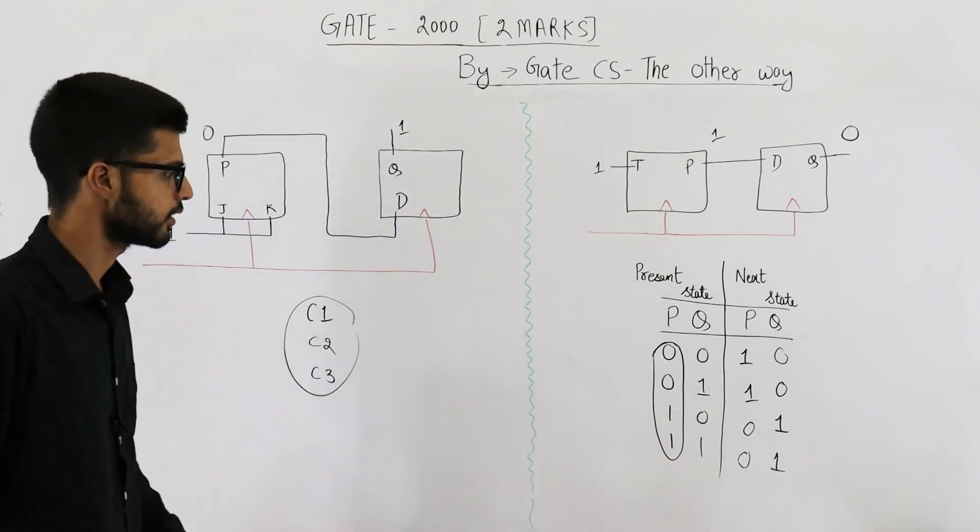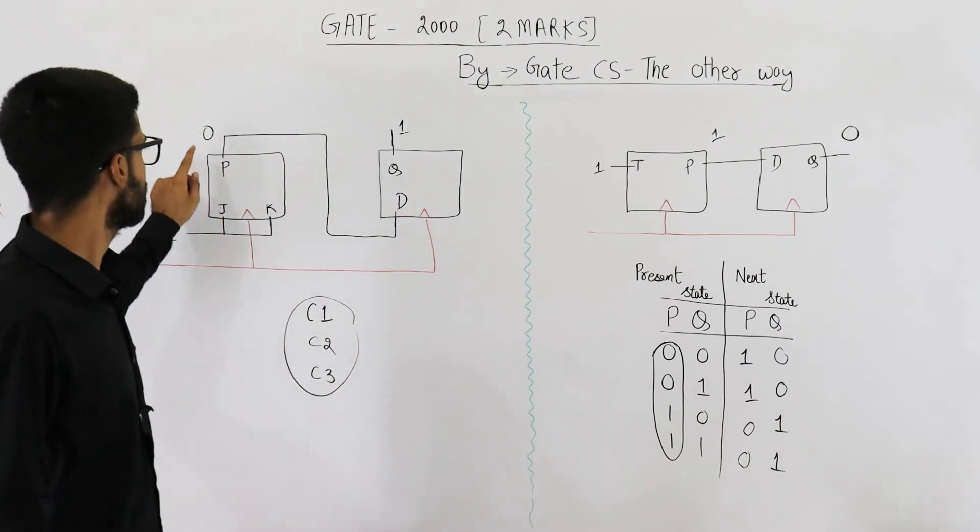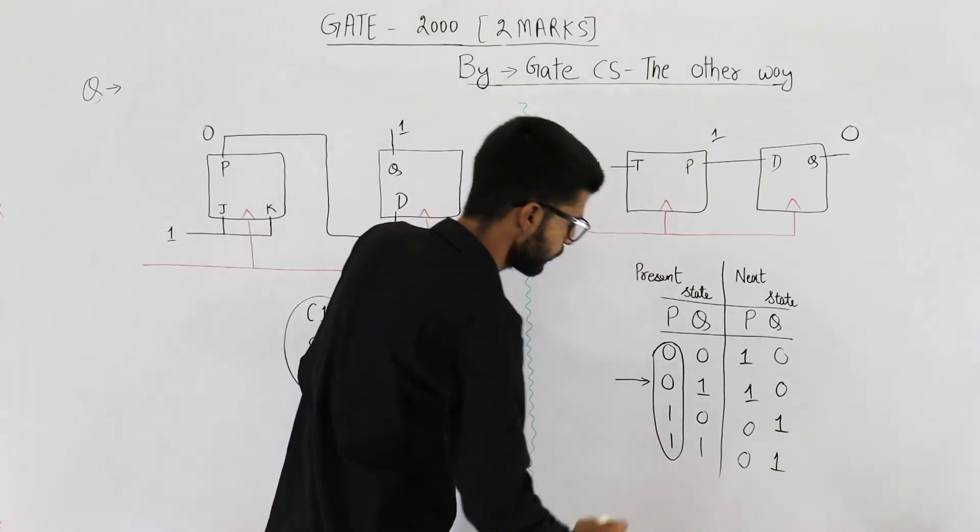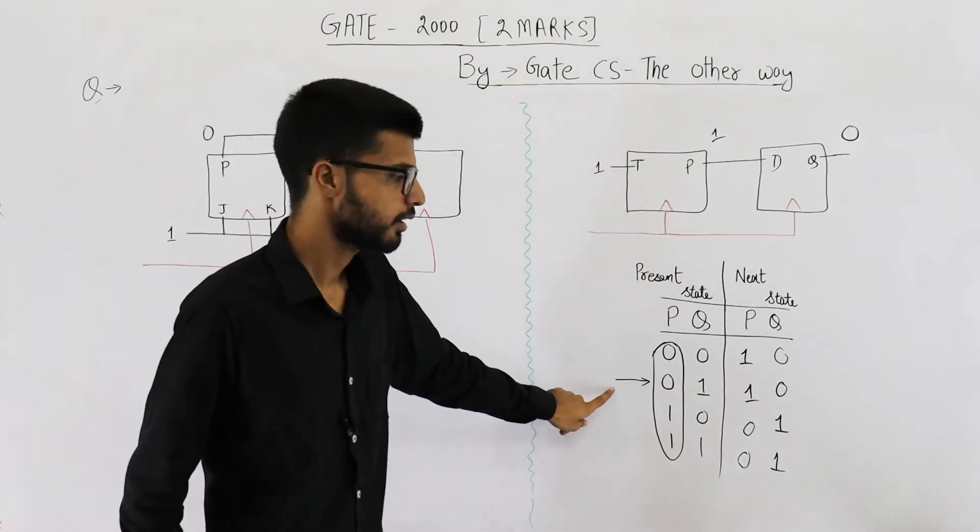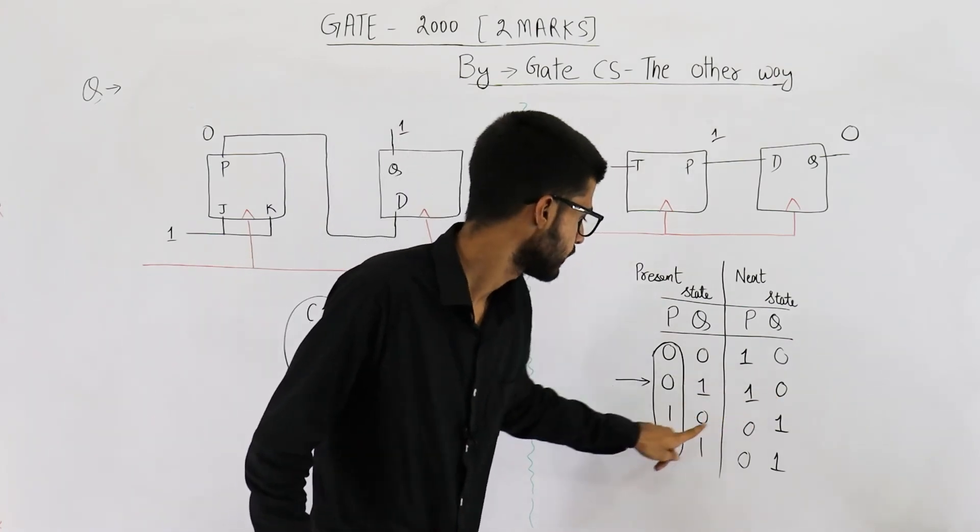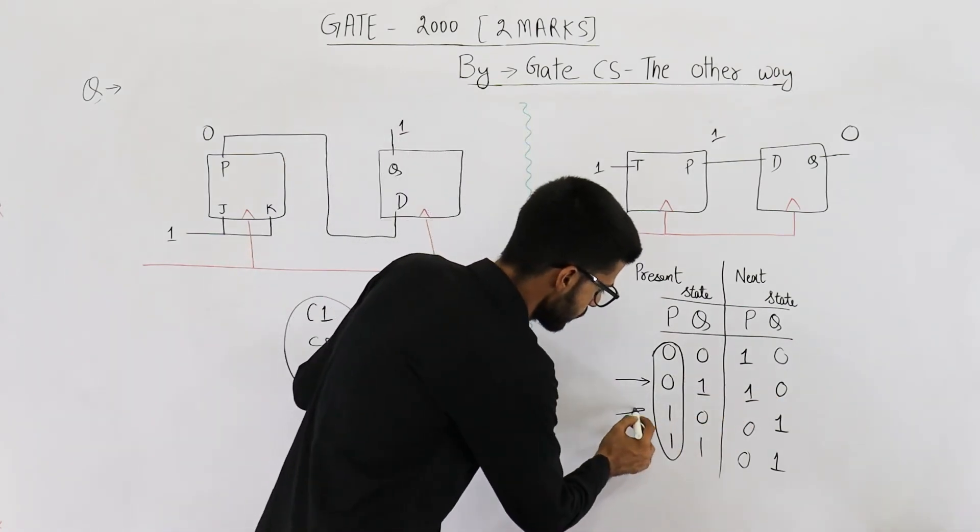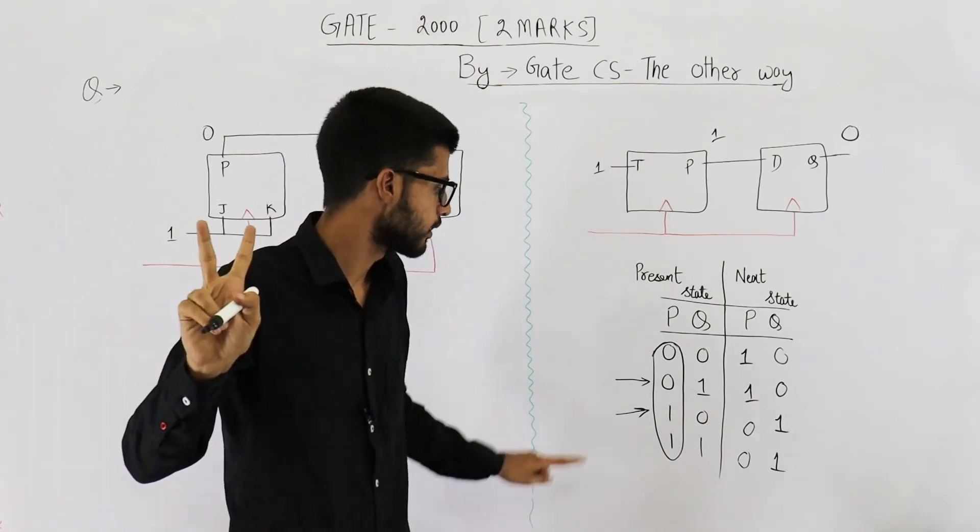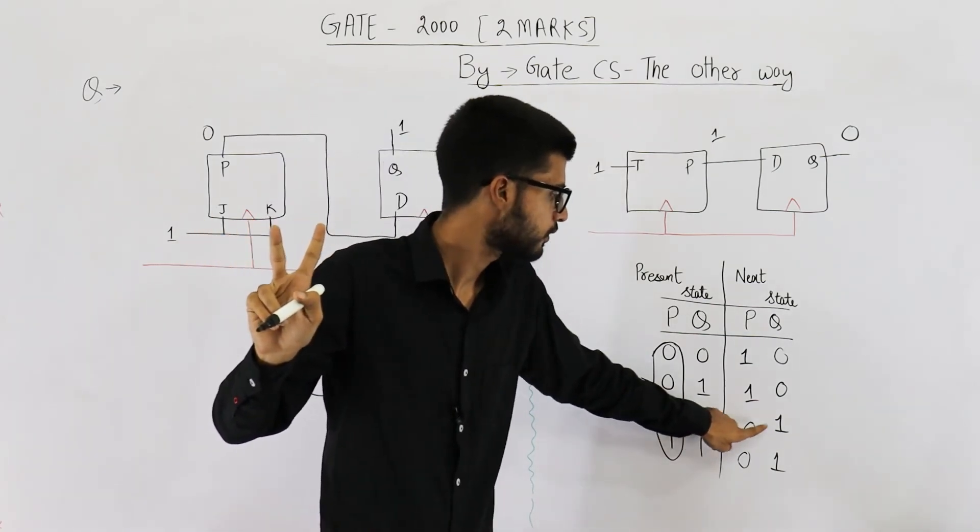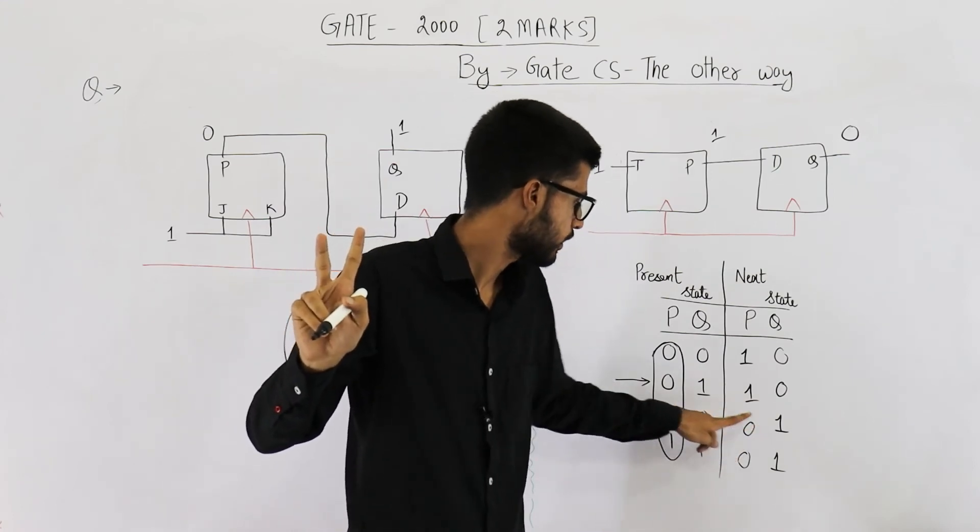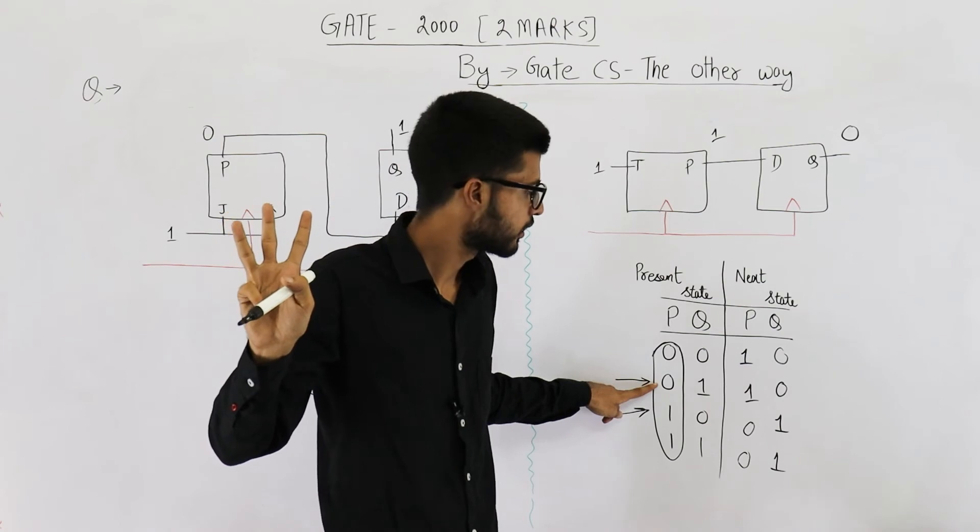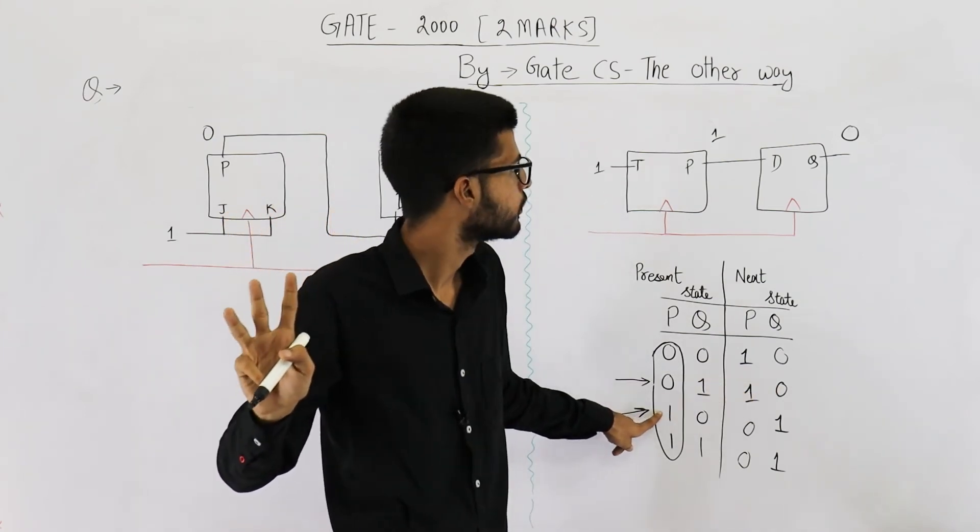So from here also we can determine, see initial value was zero one. So initial state is this one. From this state if one clock cycle is given you go to one zero. That means this one. First clock cycle is done. Then you are given second clock cycle. You will come back on zero one. From here you go to zero one. That means this state.